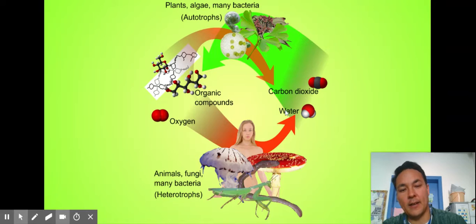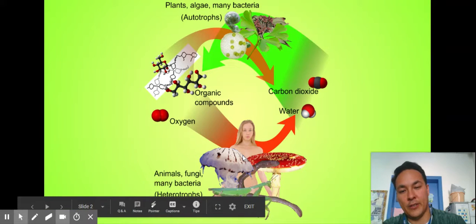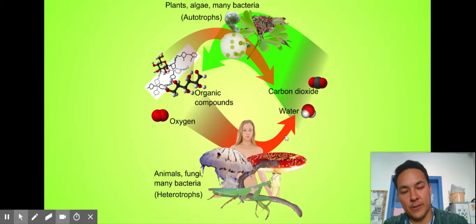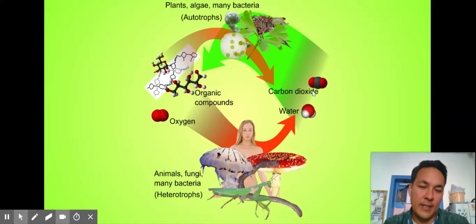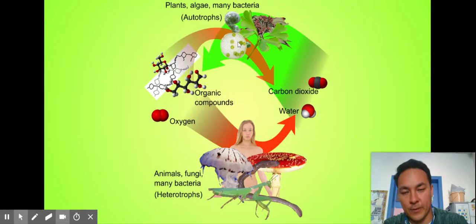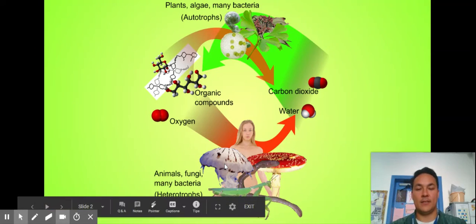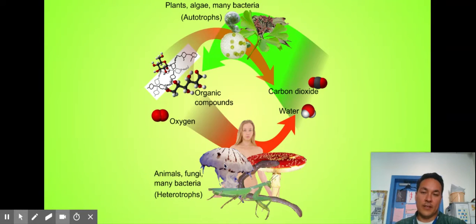And so notice how the products of each are the reactants of the other. The products of heterotrophs or cellular respiration, carbon dioxide and water, is what autotrophs need. That's what this big green arrow is saying. It's what plants need in order to do photosynthesis. The products of photosynthesis, which would be sugars and oxygen, are what we need to do cellular respiration. So without plants, it would be very sad, right? We either eat plants or we eat things that ate plants, and without that, we wouldn't have any energy.